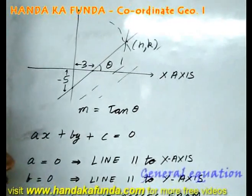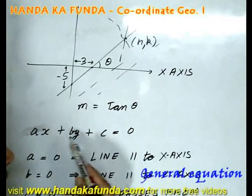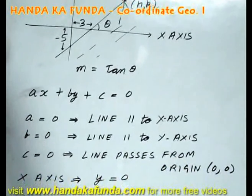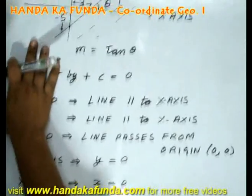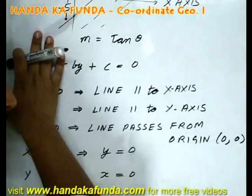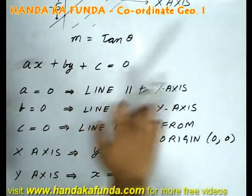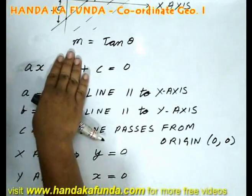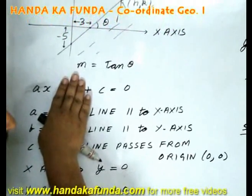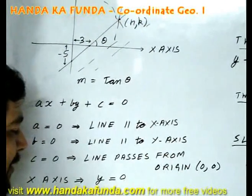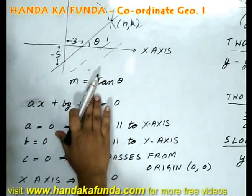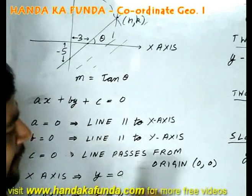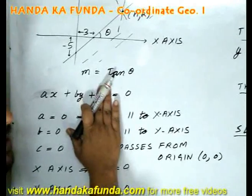The general equation of a line, since it is linear, it is of degree 1. It is ax plus by plus c is equal to 0. Now, let us look at a few things. Suppose, if a is equal to 0. What does that mean? That means my equation has become by plus c is equal to 0, or it does not have an x-component. That will mean the line will be parallel to the x-axis. What if b is equal to 0? That means my line will be ax plus c is equal to 0, or x is a particular constant, which will mean it is parallel to the y-axis. What if c is equal to 0? If c is equal to 0, then my line is of the format ax plus by is equal to 0. That means it has to pass from the origin. Think about it.